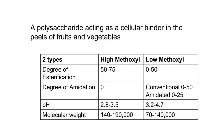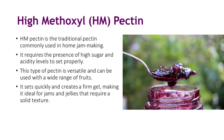High-methoxyl pectins have over 50% of their carboxyl groups esterified with methanol, low-methoxyl pectins between 5% and 50%, and pectic acid below 5%.